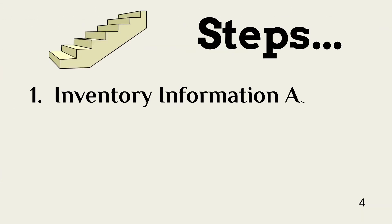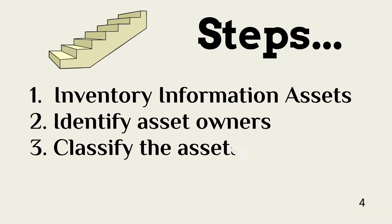The asset classification process consists of three steps. First, the information assets are inventoried, and the critical business functions they support are identified. The asset owners are then identified, including documenting the data, critical business functions, and system owners, as well as other stakeholders. The final step is to classify each asset based on its sensitivity and its criticality to the organization.